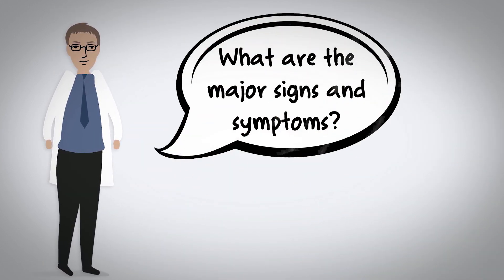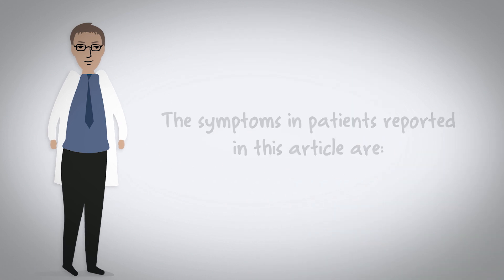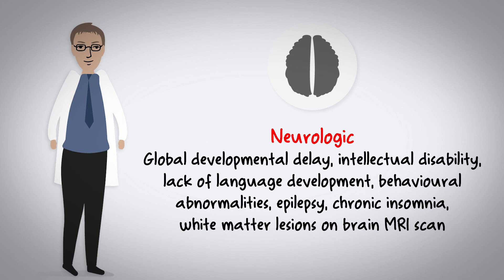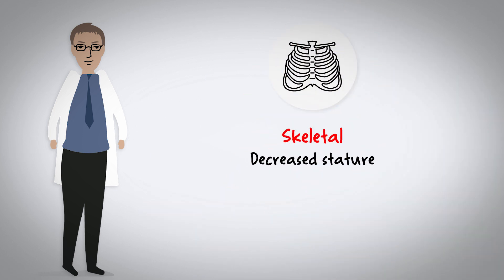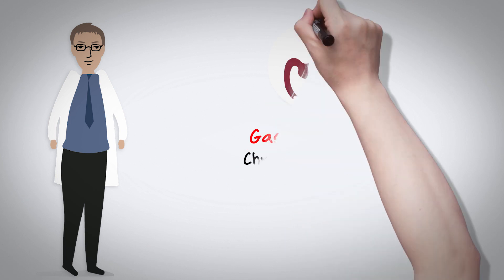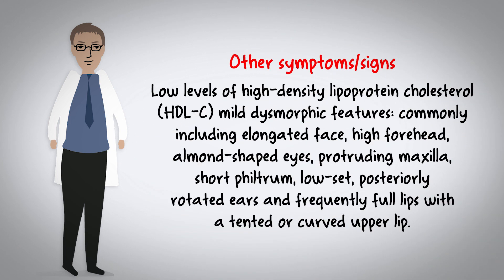What are the major signs and symptoms? The symptoms in GALNT2-CDG patients reported in this paper are neurologic, including global developmental delay, intellectual disability, lack of language development, behavioral abnormalities, epilepsy, chronic insomnia, and white matter lesions on brain MRI. Skeletal symptoms include decreased stature, and gastrointestinal symptoms include chronic constipation. Other signs include low levels of high-density lipoprotein cholesterol and mild dysmorphic features.